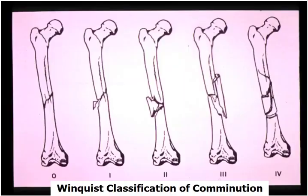The Winquist classification: Winquist 0 is absolutely no comminution. Winquist 1 is a very small, insignificant amount of comminution. Winquist 2 is a butterfly fragment with greater than 50% cortical contact. Winquist 3 is a much larger amount of comminution with less than 50% cortical contact. Winquist 4 is essentially a segmental fracture with no contact between the primary proximal and distal shaft fragments.